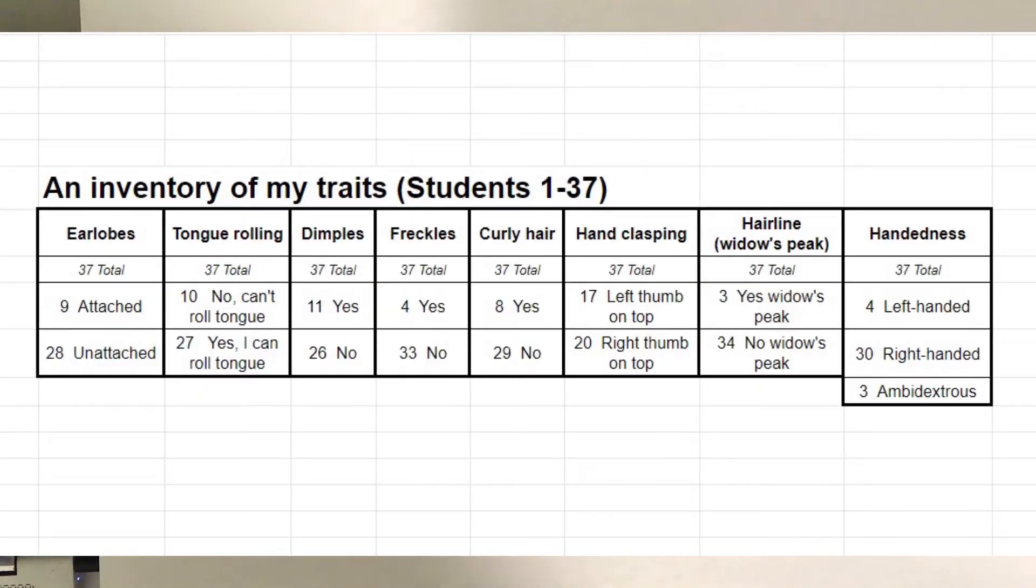Okay, so here are the results for all the students when I added up all the results. Earlobes, tongue rolling, dimples, freckles, curly hair, hand clasping, hairline, and handedness are all the different categories that we did our inventory for. And what we're going to do is we're going to make a graph of this so that we can visualize the data that's here. As you can see there's a bunch of numbers on this but it's kind of difficult to visualize it which is why graphing is so important for data so that you can visualize it and see the differences between the categories.